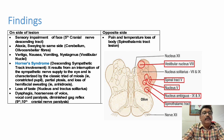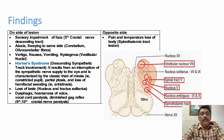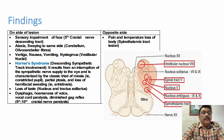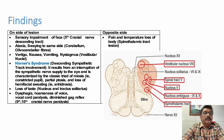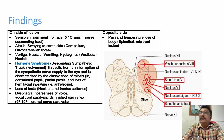The patient can have eighth cranial nerve nucleus involvement, presenting with vertigo, nausea, vomiting, and nystagmus. The patient can also have loss of taste due to involvement of the nucleus tractus solitarius, dysphagia, hoarseness of voice, vocal cord paralysis, and diminished gag reflex — because the ninth and tenth cranial nerves are also involved.